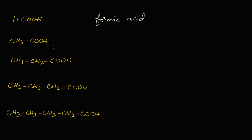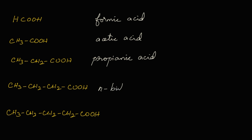CH₃COOH is known as acetic acid, which is present in vinegar. The third one, CH₃CH₂COOH, is propionic acid — three carbons are there. The fourth one is n-butyric acid because four carbons are present in the straight chain, so we write 'n'. The fifth one has five carbons and is known as n-valeric acid.